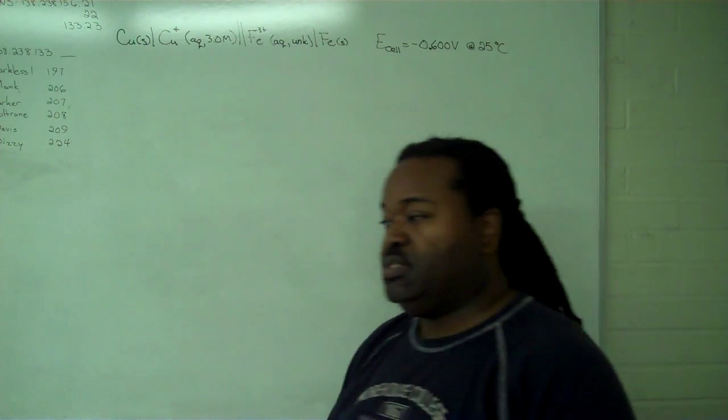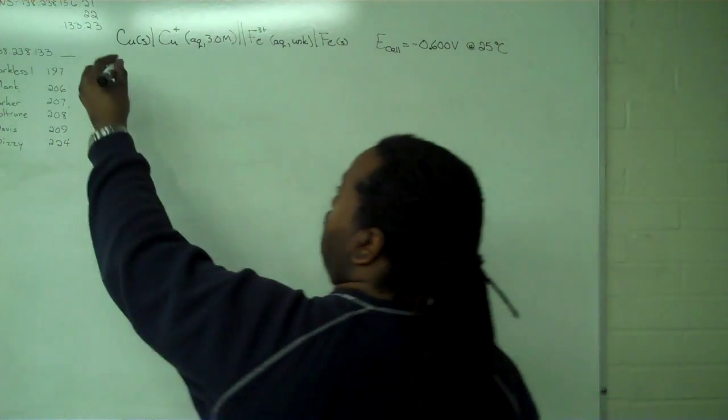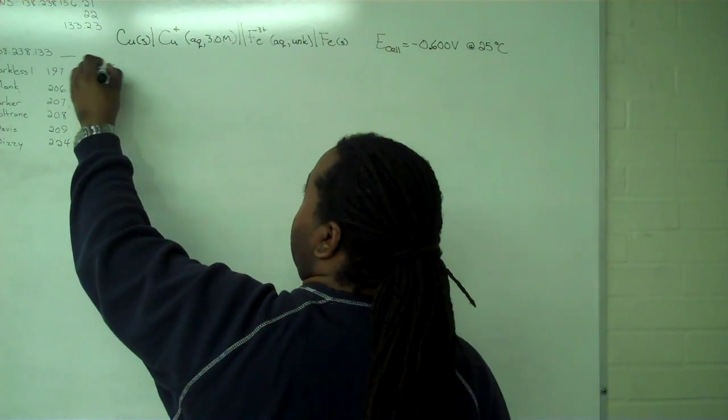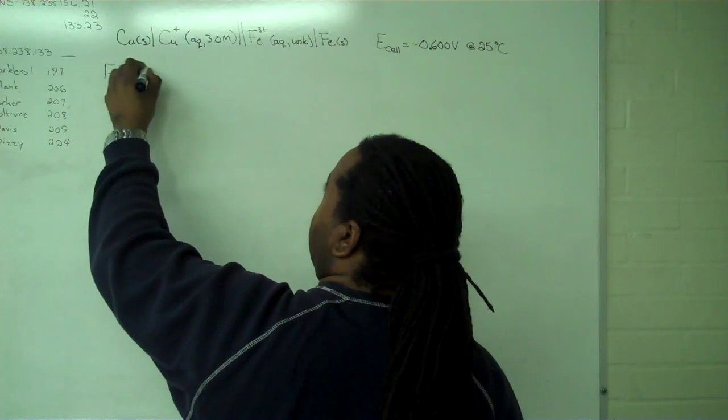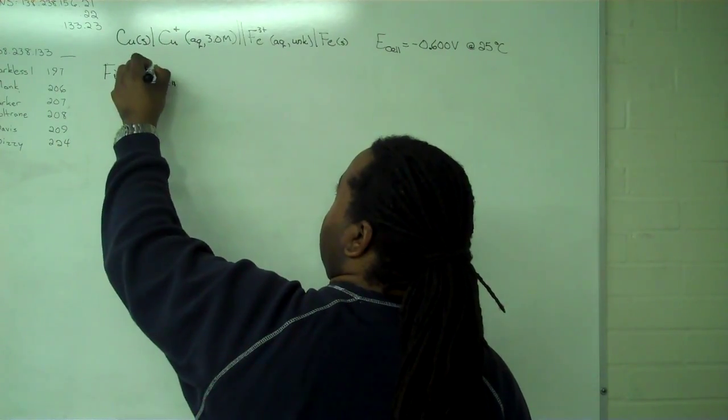The first step is very similar to other Nernst equation problems where we need to first find a value for E cell standard.